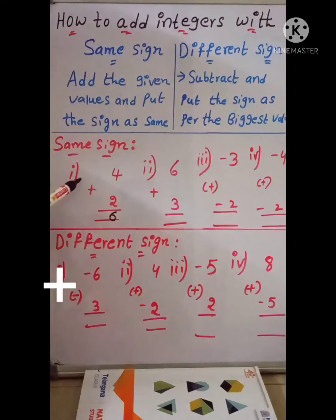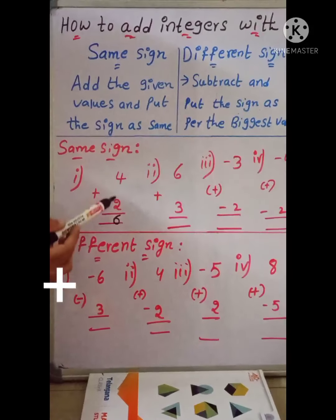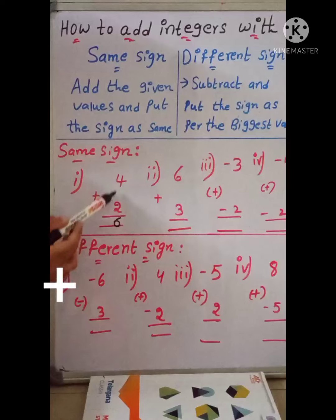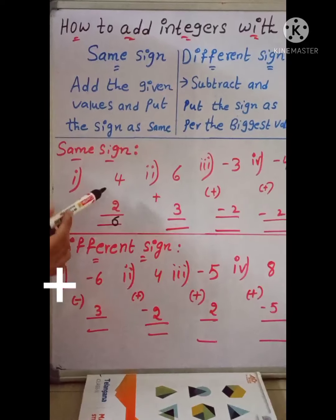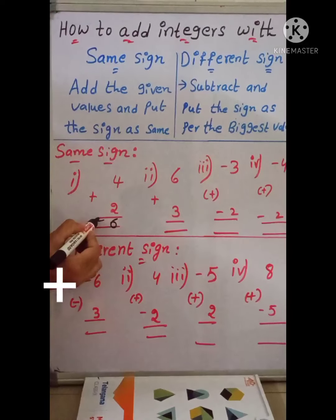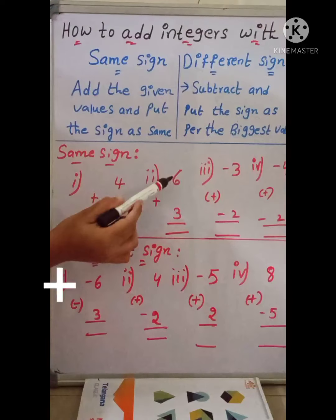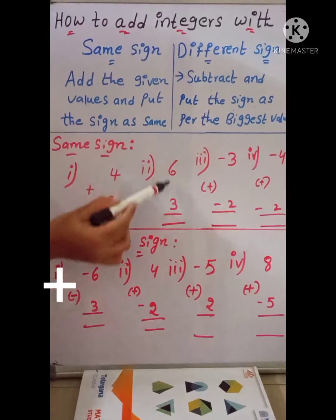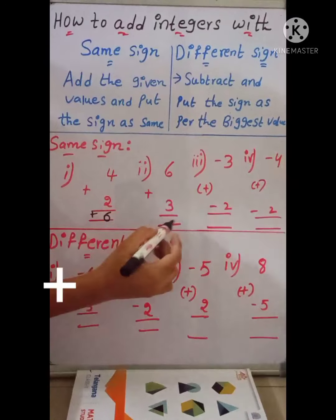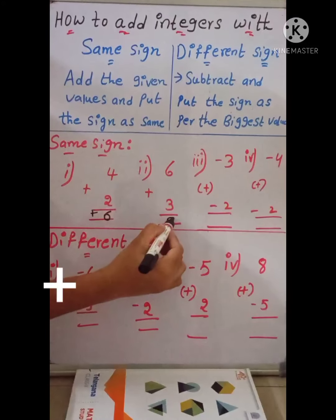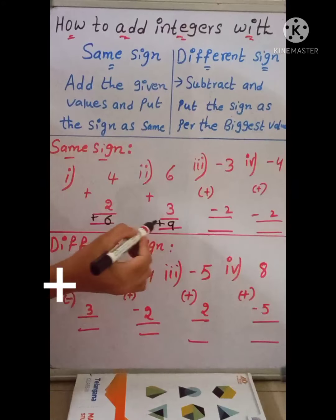Let's do some examples. Here, 4 plus 2 equals 6. These two numbers are positive values, so put the sign as positive. The second example is 6 plus 3. These two numbers are also positive values. Just add them: 6 plus 3 equals 9, and put the sign as positive.